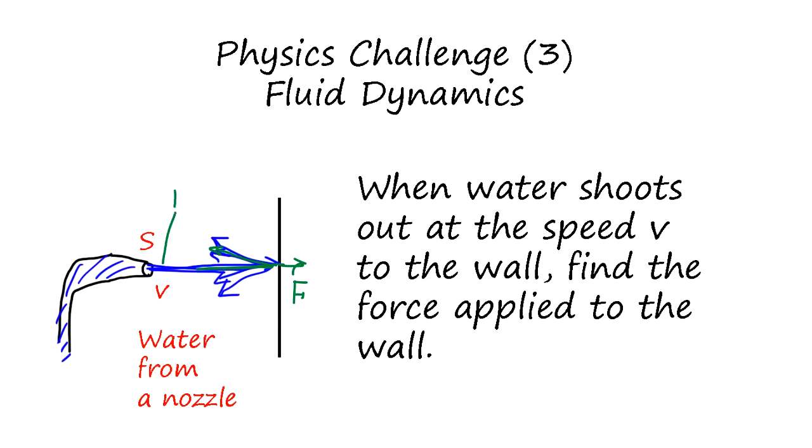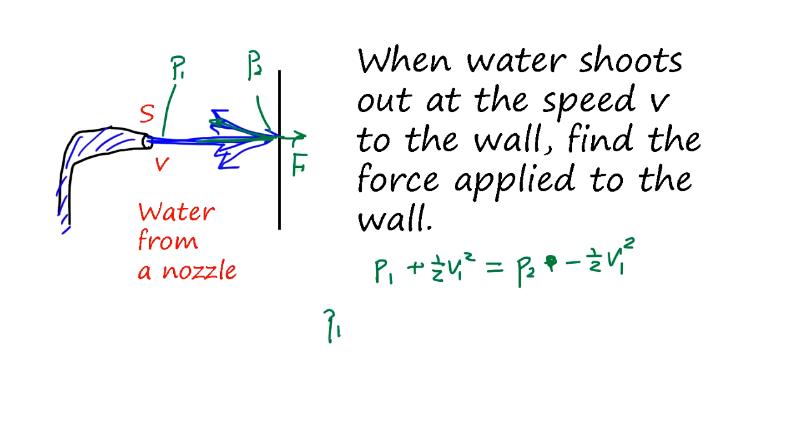Now suppose you have pressure here and pressure here. So it's going to be P1 plus V1 square, right? Equals P2 plus, but you have to be careful, this flowing opposite direction, so V1 square. So the pressure difference is actually P1 minus P2 delta P equals V1 square.